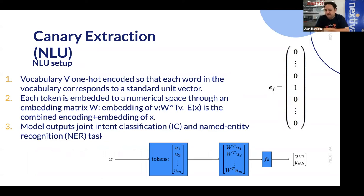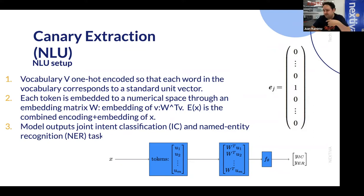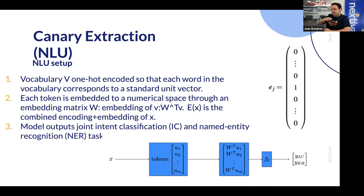Let's go deeper into the natural language understanding setup. There's going to be a set of words — the vocabulary. Sentences are sequences of elements in the vocabulary, and each word in the vocabulary is going to be one-hot encoded, so that each word corresponds to a standard basis vector: all zeros with a one at the index of that word. You get a token sequence, and then each element is embedded through a linear embedding, mapping the tokens to a numerical space.